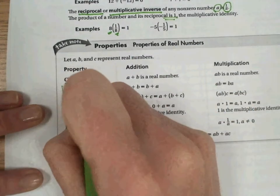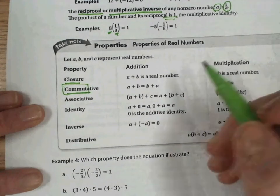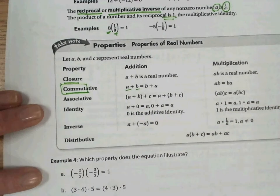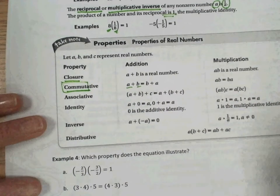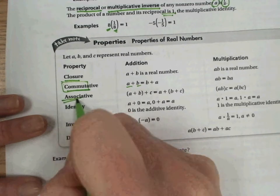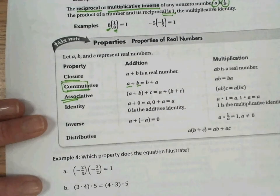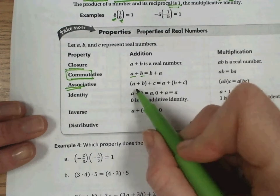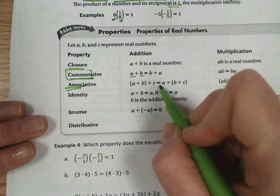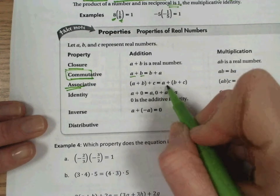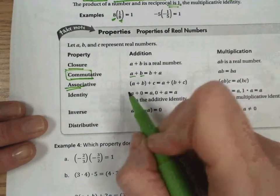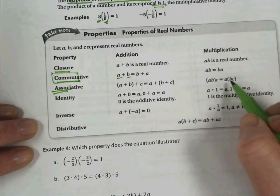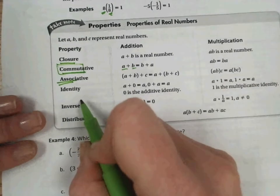Next, the commutative property. And think of the word commute here. And that is when we have two values that can switch places, when we add them or multiply them, and get the same result. The associative property. Think about who you associate with. So who you are grouped with. In this property, we see a plus b, the group, plus c, is going to be equal to a plus the group b plus c. Notice that the order is the same, the groups have just changed. And this also applies in multiplication.